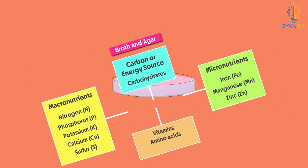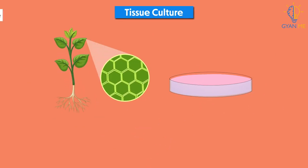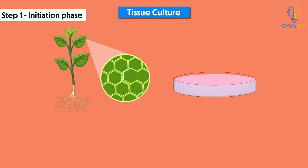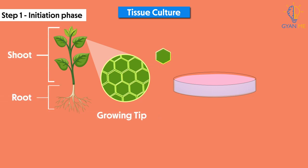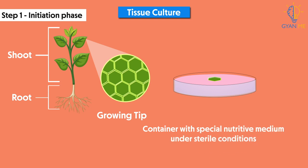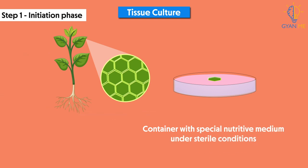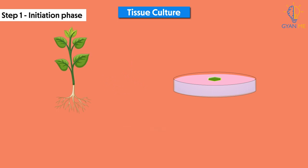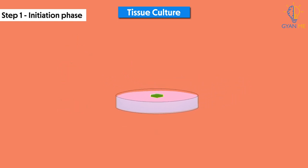In this method, a small piece of tissue called an explant is extracted from the plant's growing point, such as the tip of the root or shoot. It is then transferred into a container with a special nutritive medium under sterile conditions. This is the first step of tissue culture and is called the initiation phase.